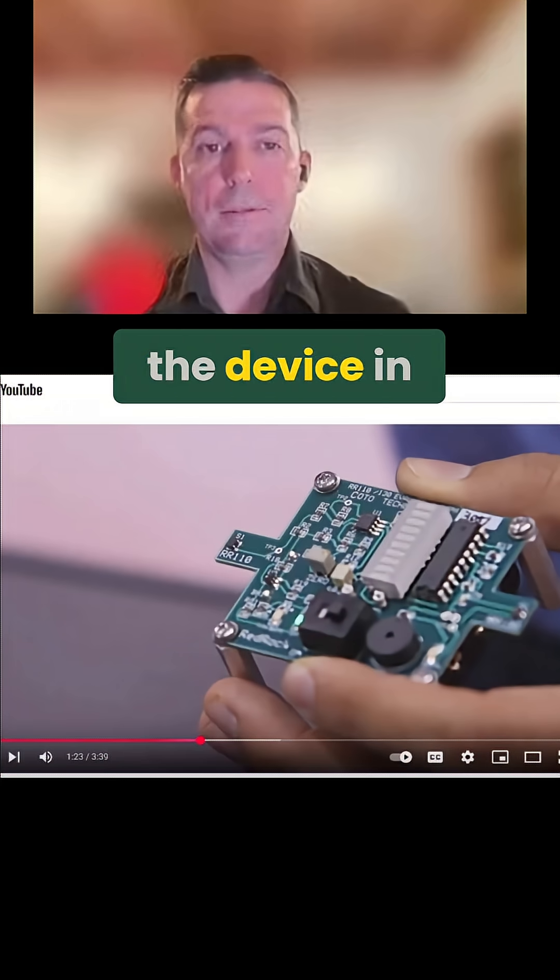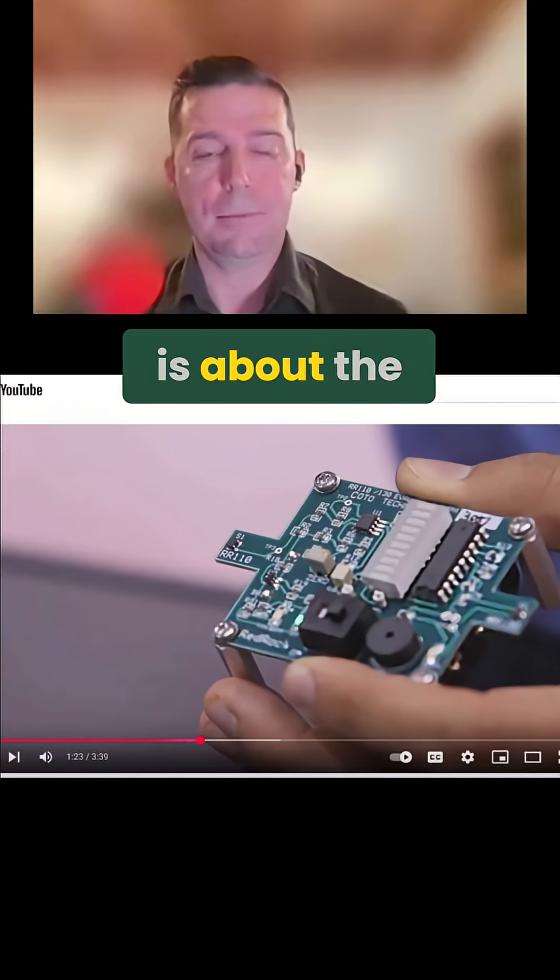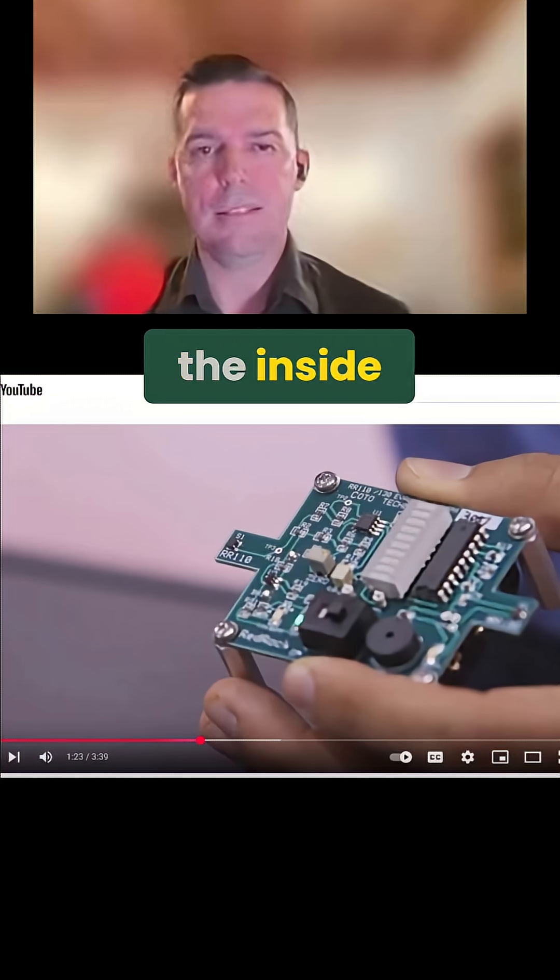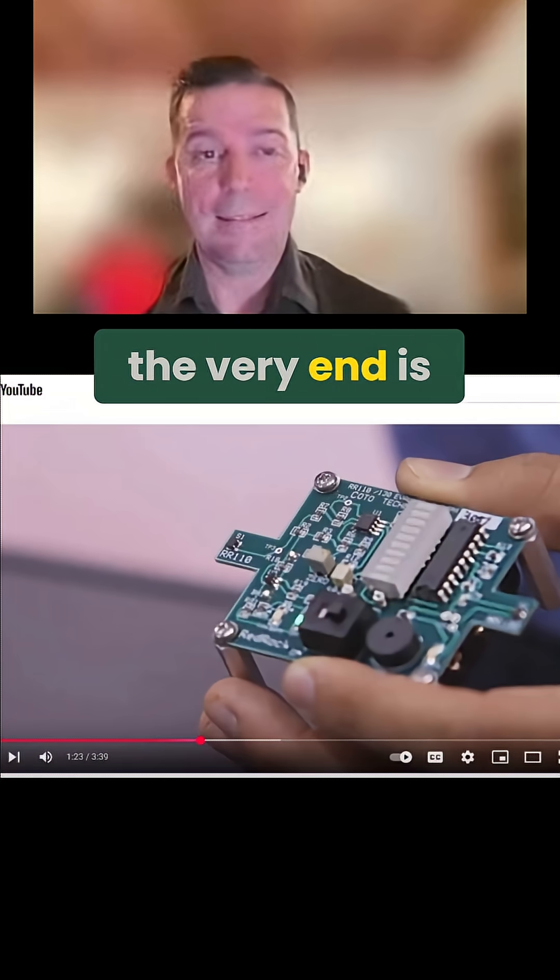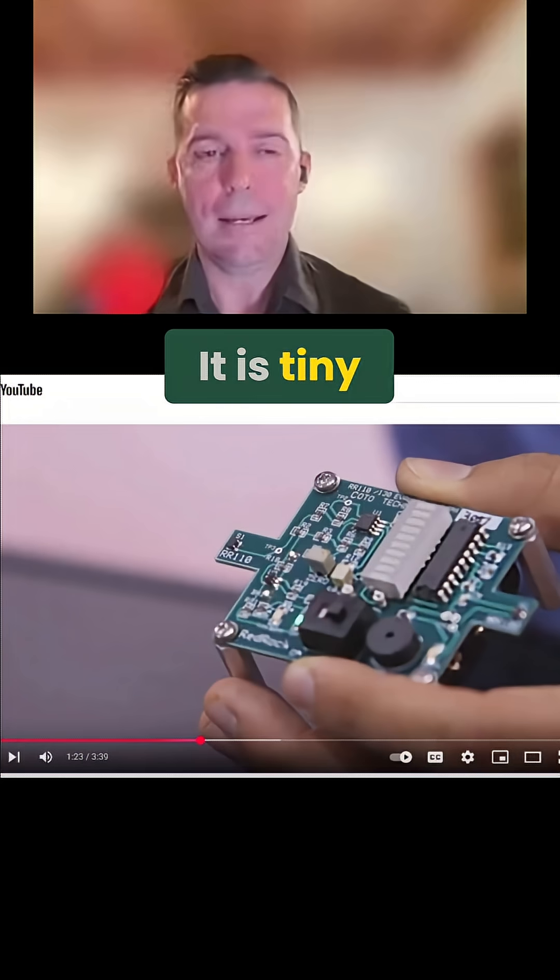The device in his hand is about the size of the very palm of his hand, maybe one inch, two inches in diameter. But the device at the very end is smaller than a housefly. It is tiny.